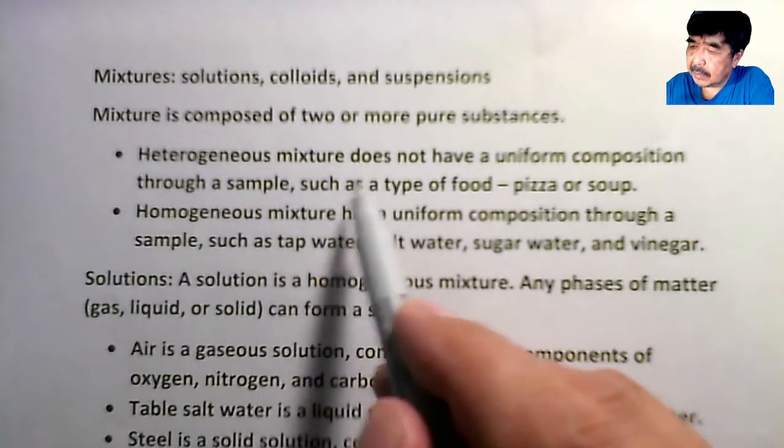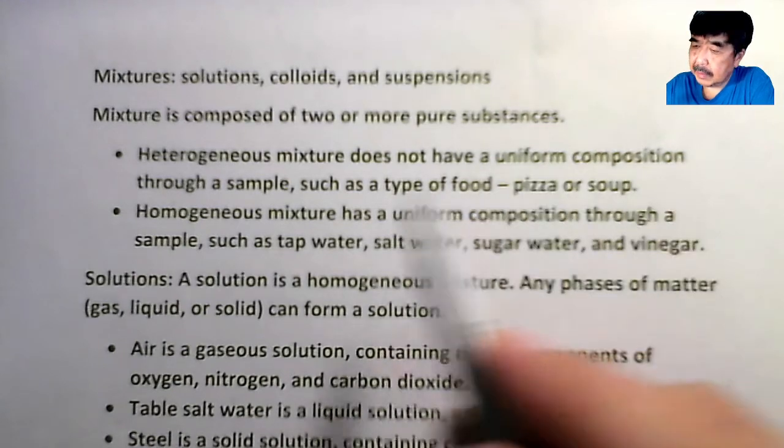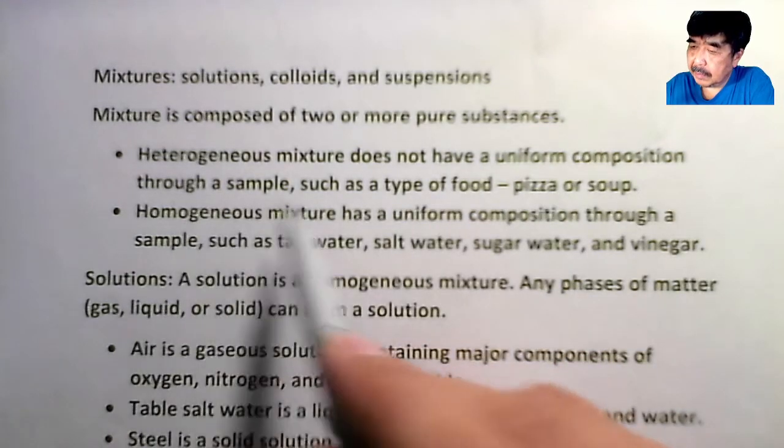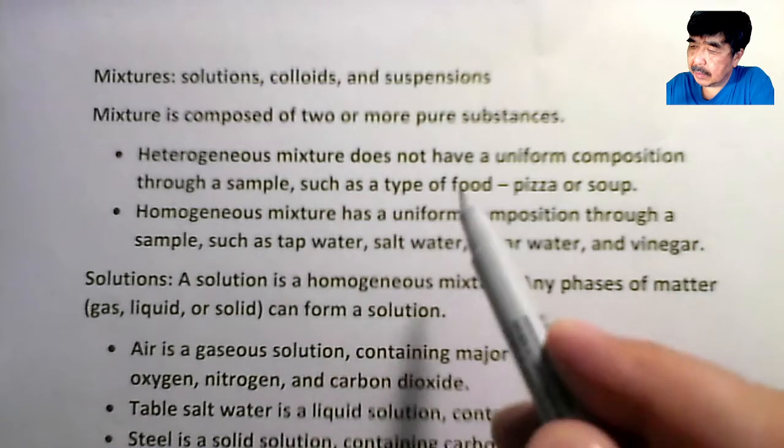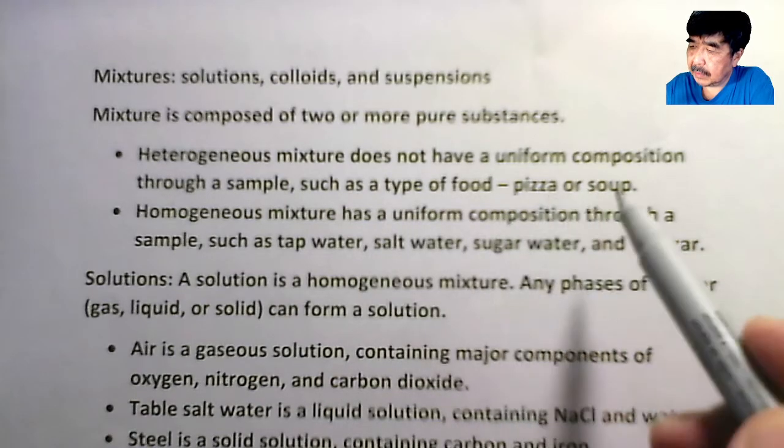Heterogeneous mixture doesn't have a uniform composition through a sample, such as a type of food, pizza, or soup.